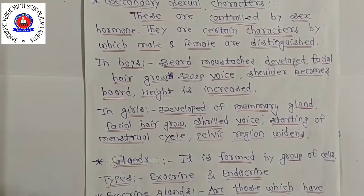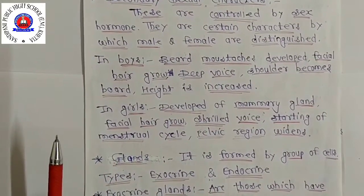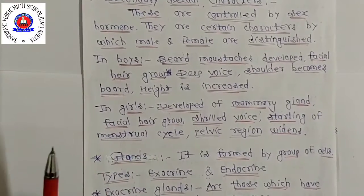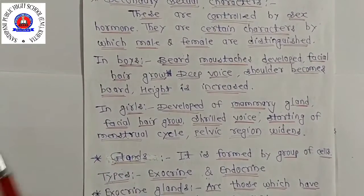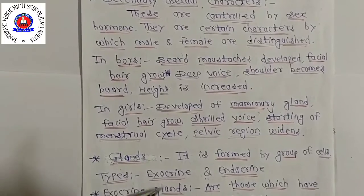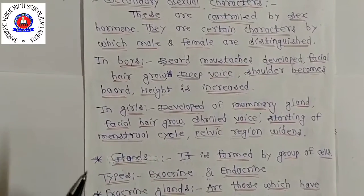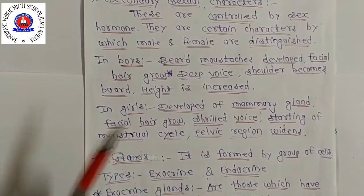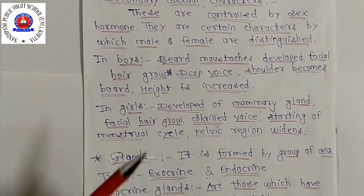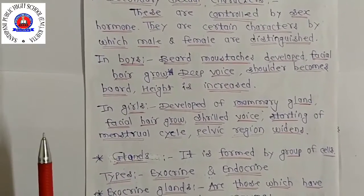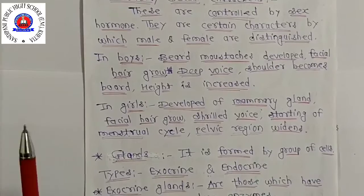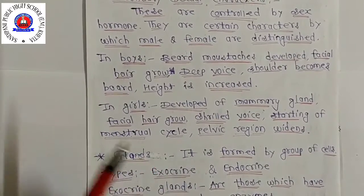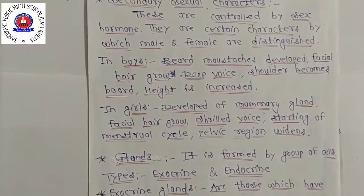The ovaries start to release eggs, and the monthly period begins. Feelings and sexual drives associated with adulthood begin to develop. All these changes in girls are brought about by the female sex hormone progesterone made in the ovaries. The hormone estrogen is also involved — also written and spoken as estrogen.